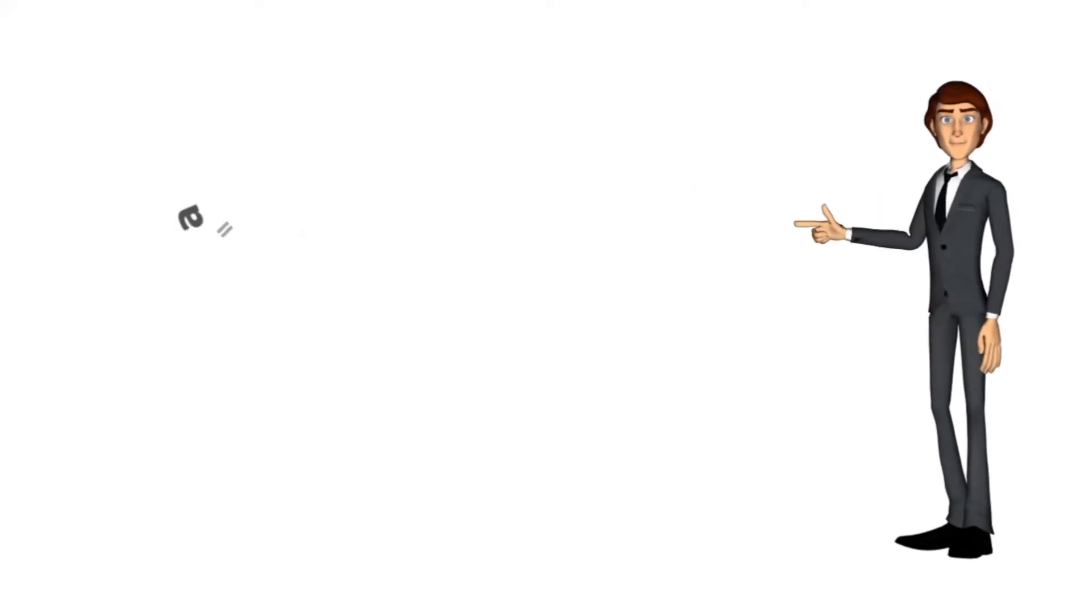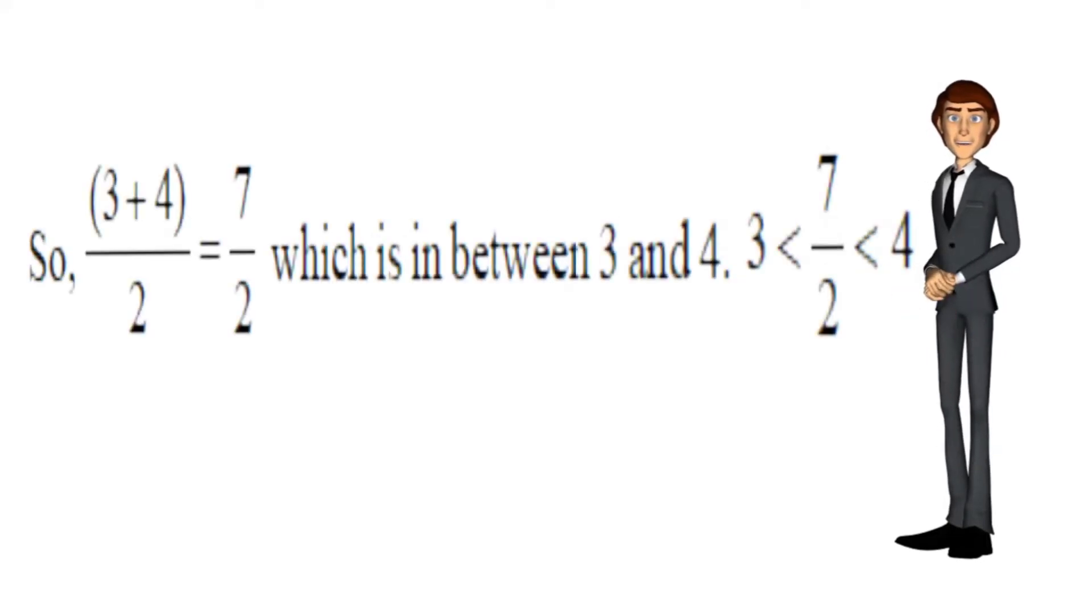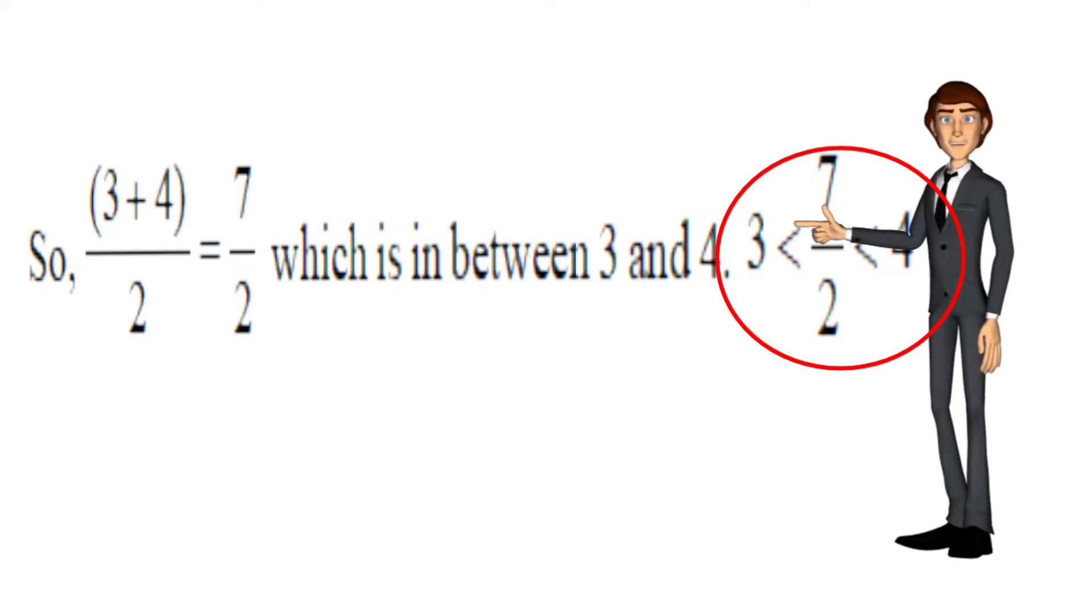Here A equals 3 and B equals 4. So the average of 3 and 4 is 7 by 2, which is between 3 and 4. So 7 by 2 lies between 3 and 4.